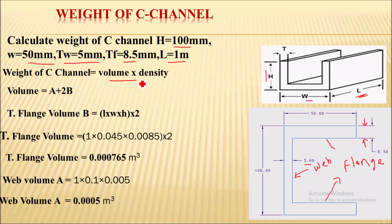Weight of C channel is volume times density. We will start by calculating the volume for flange and web. We will consider flange up to this portion only. The width of the flange after subtracting 5mm from 50 becomes 45mm.